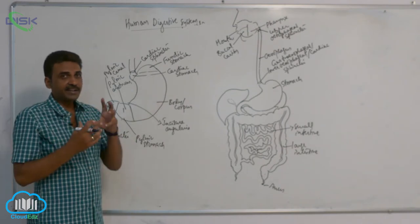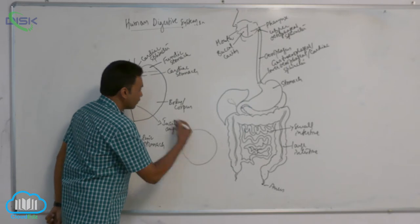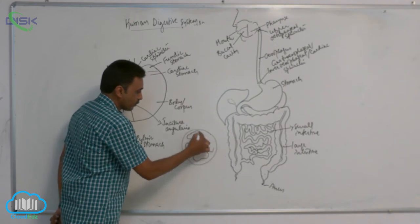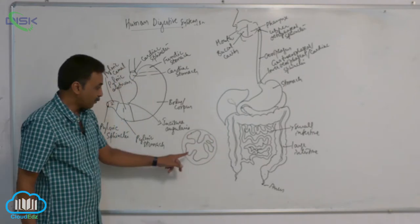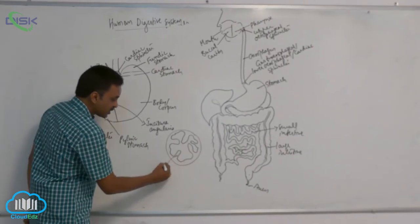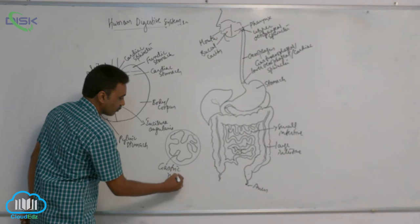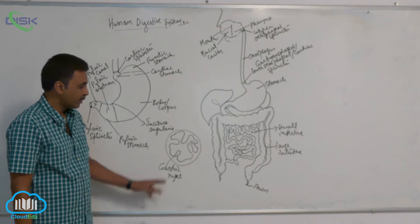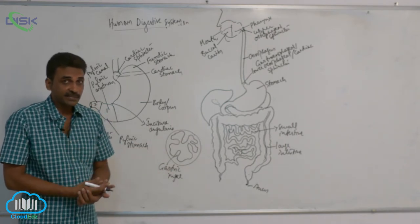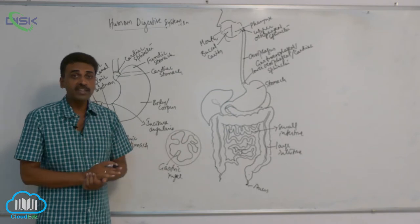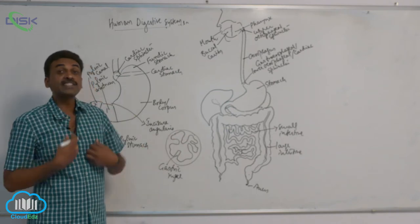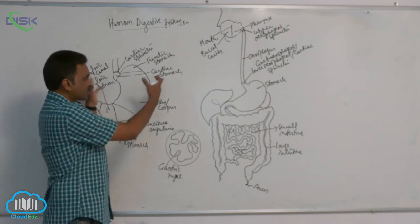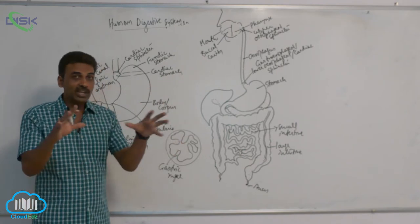If you observe the inside of the stomach in cross-section, you can see folds called gastric rugae — similar to the esophageal rugae we discussed earlier. When the stomach is empty, you can see the rugae, but when food is taken and the stomach expands, the rugae gradually disappear. So they are not permanent folds.